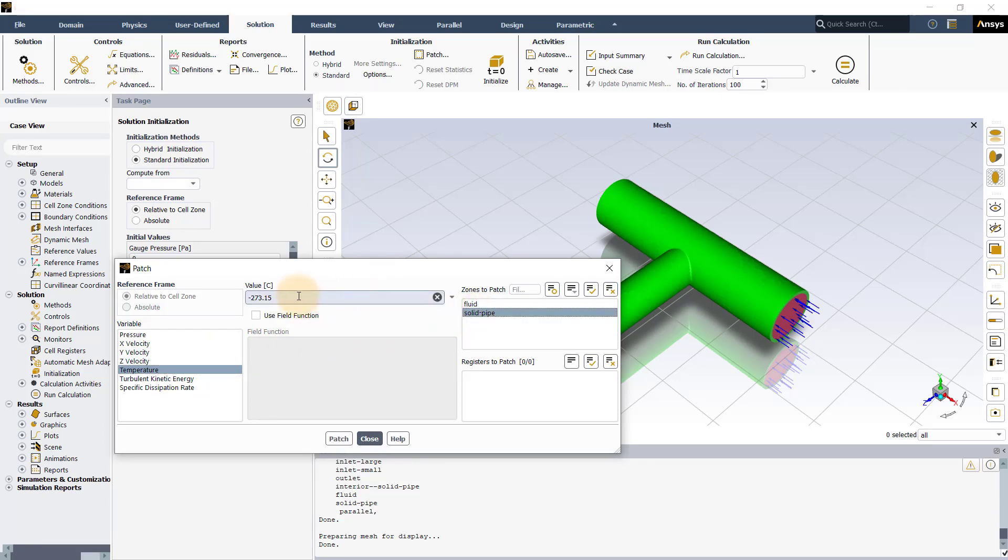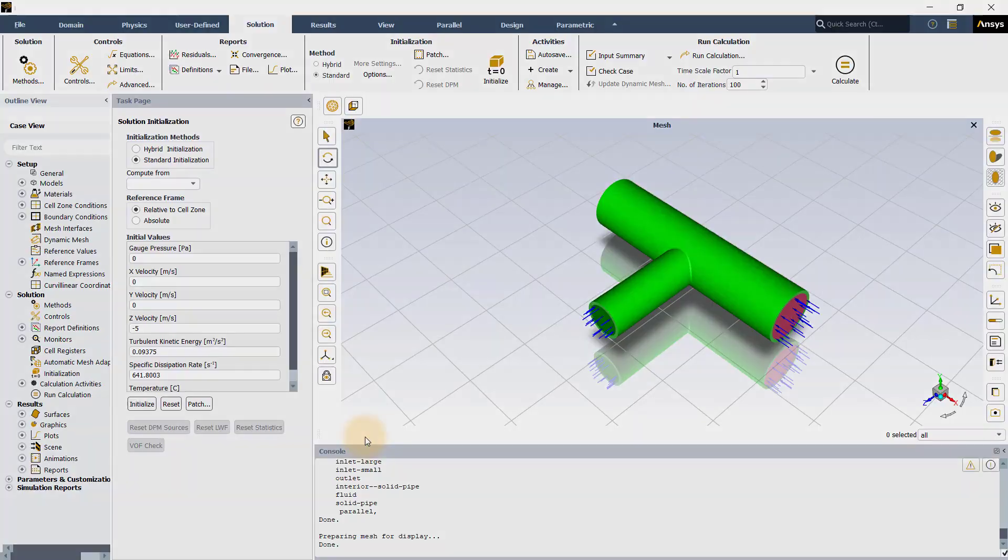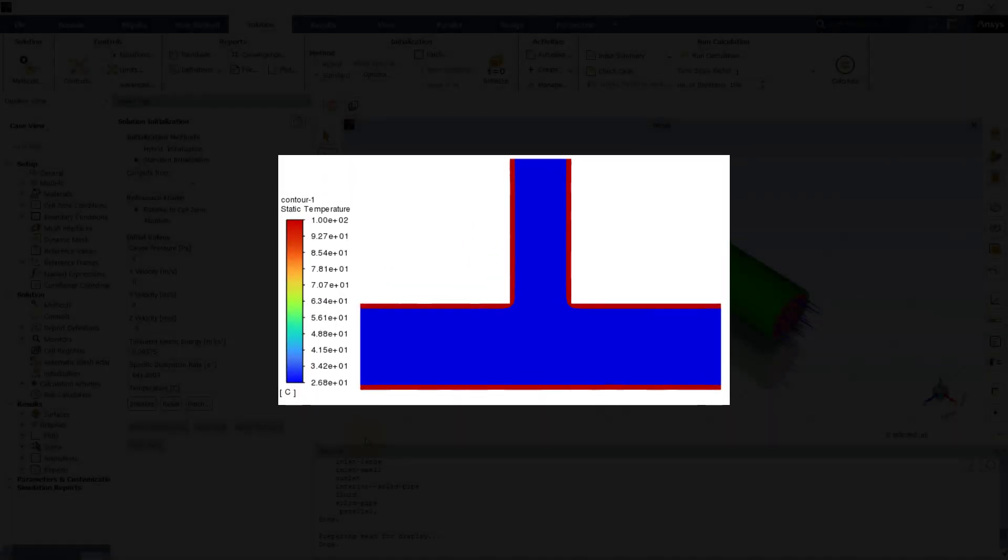Also, define the temperature value to which the solid pipe is to be patched. Here, it is 100 degrees Celsius. Click on Patch and close the dialog box. You can now see the solid wall is patched with a temperature of 100 degrees Celsius.